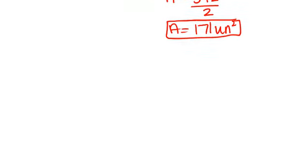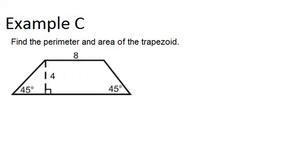Alright, and let's look at example C. Find the perimeter and area of the trapezoid. Now in this trapezoid, we're given that 8 is base 1, and we know that our height is 4, but we don't know our base 2. So we're going to have to do some extra work to figure those out.